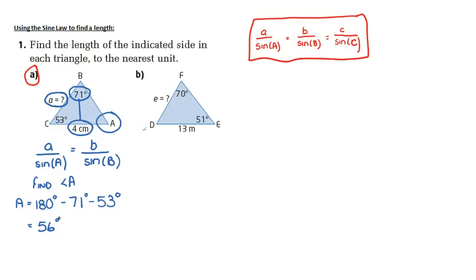Now I can substitute into my formula. So A over sine of 56 degrees is equal to B, which is 4, over sine of 71 degrees.